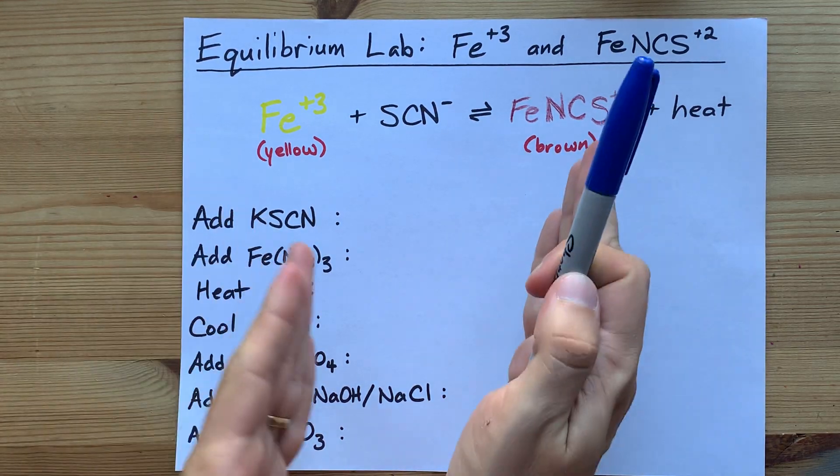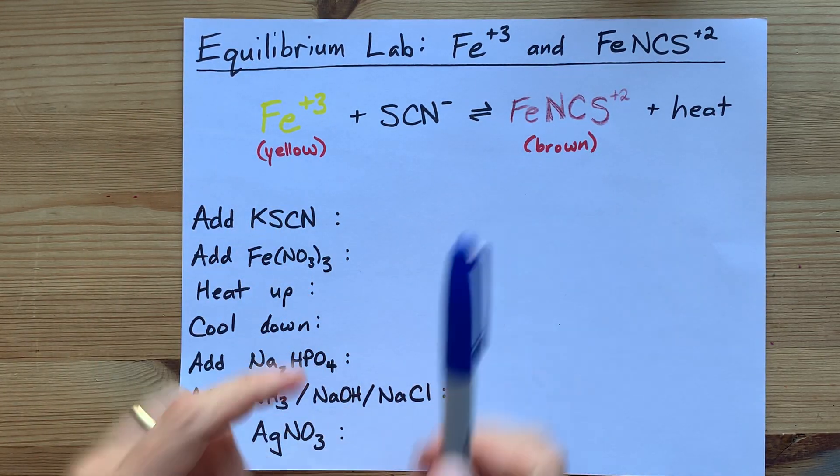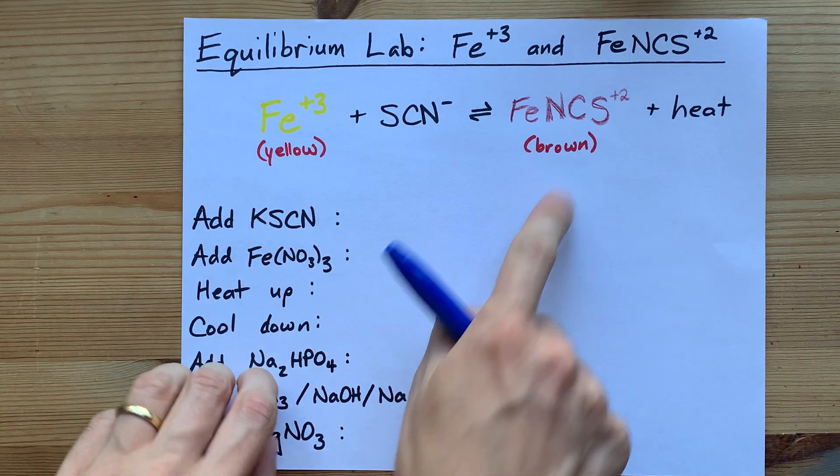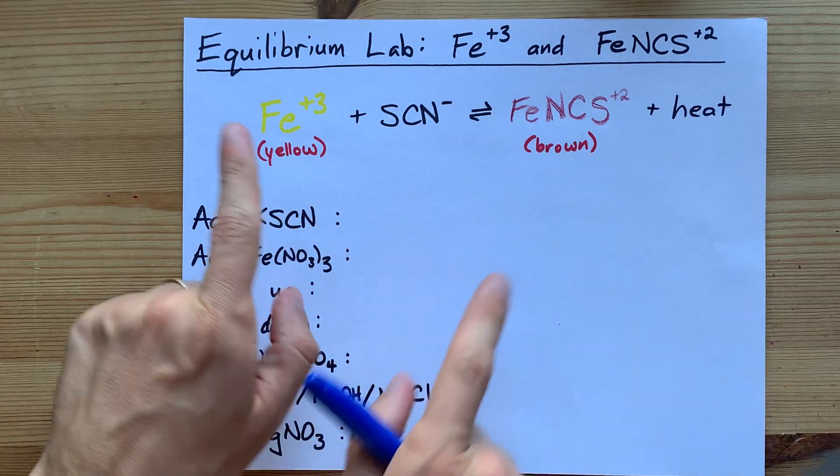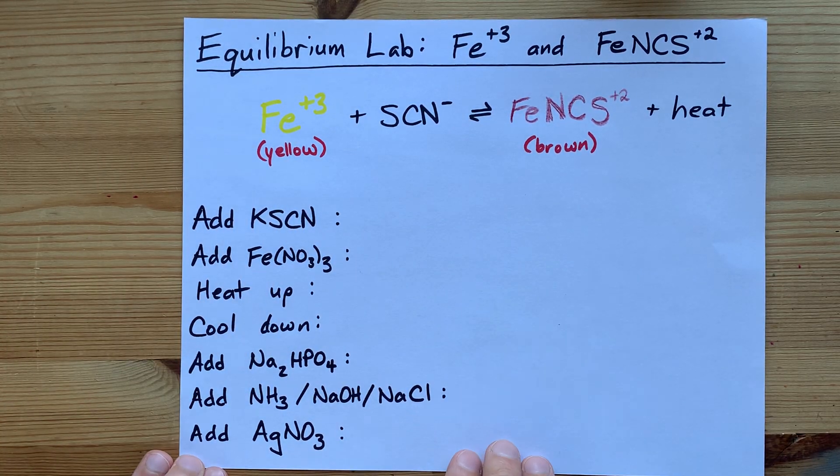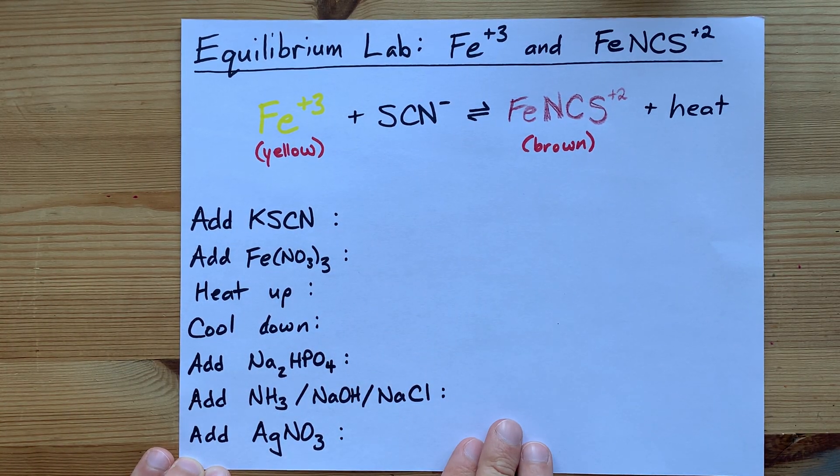By changing the equilibrium and changing the balance of reactants to products, the solution can convert from yellow to brown, back to yellow, back and forth as many times as you want until you get sick of doing the lab.